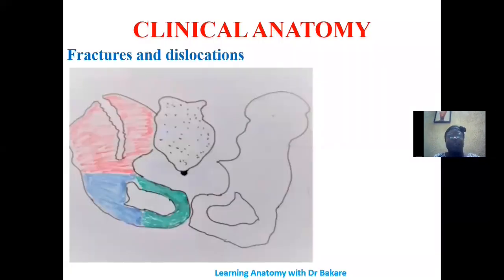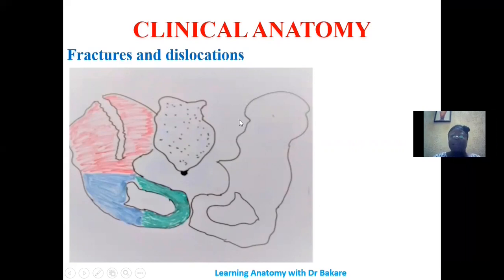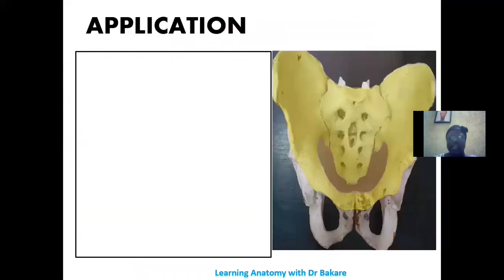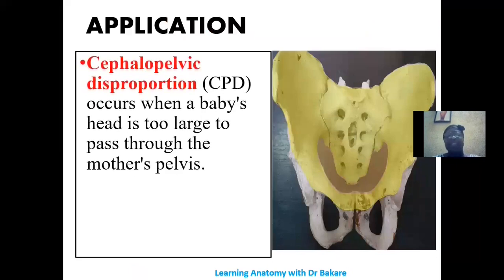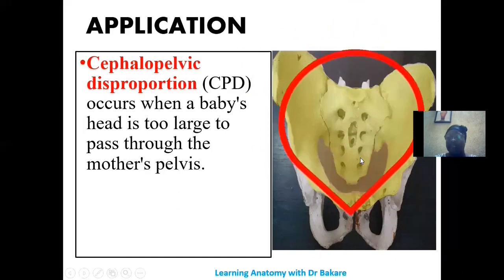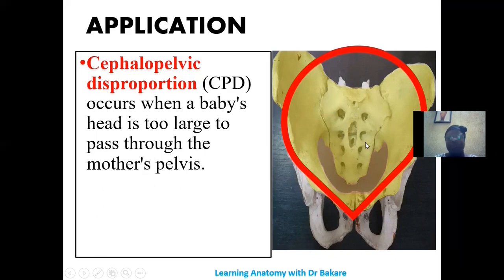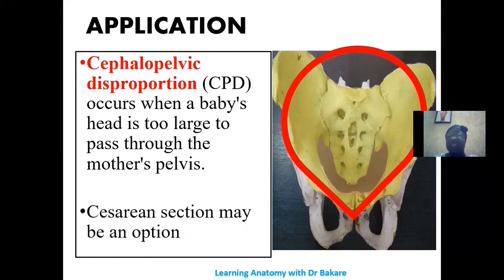Clinically, the pelvis can suffer fractures (breakage) or dislocations (detachment at joints). An important clinical application is cephalopelvic disproportion, where the head of the baby and the pelvic brim are not proportionate in size — meaning the head cannot pass through. In such cases, alternative delivery methods such as cesarean section are considered. The pelvic inlet measurements (pelvimetry) are used to assess this in females.